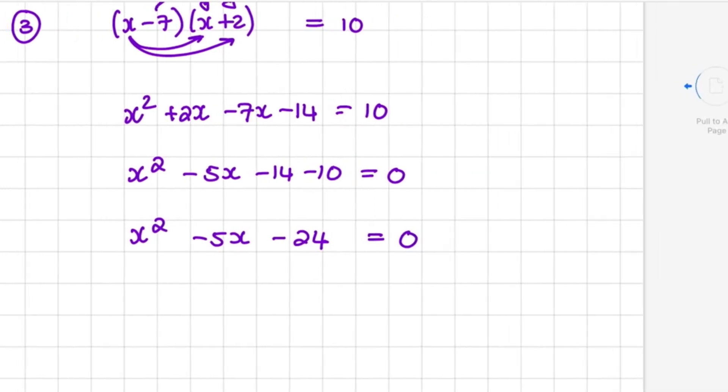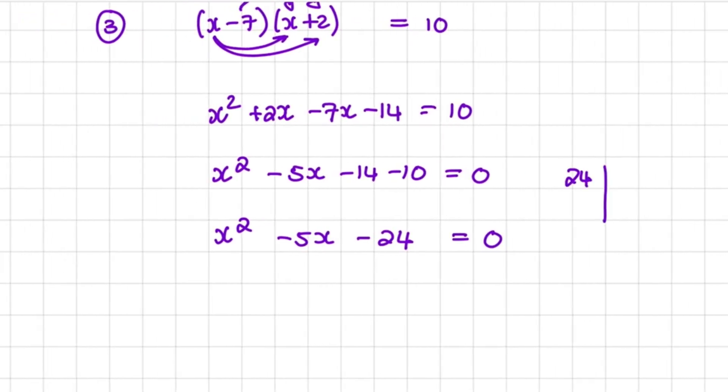And now we use the factors of 24 to find minus 5x. So it can be 1 times 24, that won't work. 2 times 12. 3 times 8. So I can see 3 and 8 will make minus 5 if I make 8 negative.